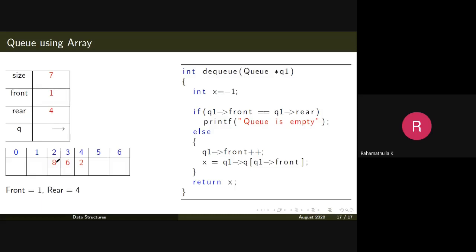Now we'll see the dequeue operation. Say the queue has size seven, front pointing to one, rear pointing to four — so you have elements at positions two, three, and four — three elements: eight, six, and two. A delete operation returns the integer being deleted. If you call delete now you should get eight. Before deleting, check whether the queue is empty: if front equals rear, the queue is empty.